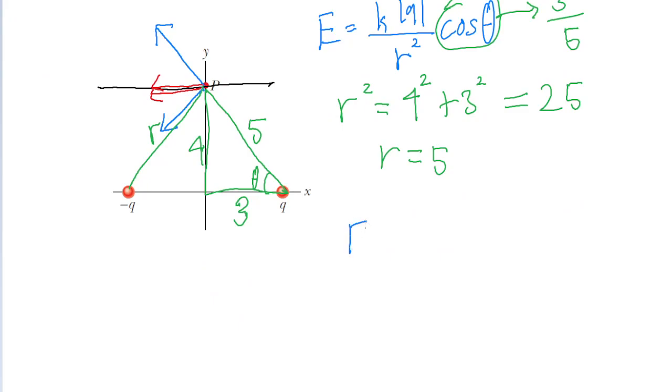So an easier way we can represent that electric field formula is kq divided by 5 squared multiplied by 3 fifths. Now this will be a good formula for one of these two horizontal components.